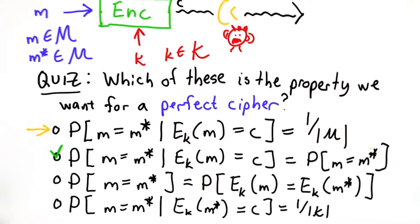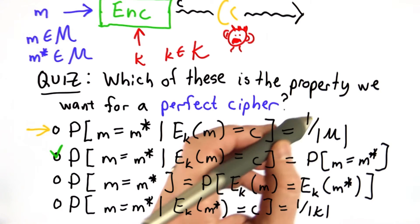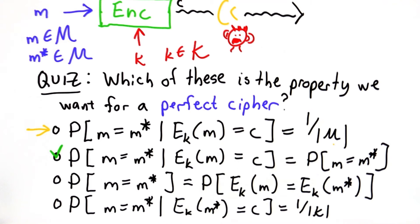The first answer would be correct if a priori the attacker knew nothing about the messages. All the attacker knows is each message is equally likely.